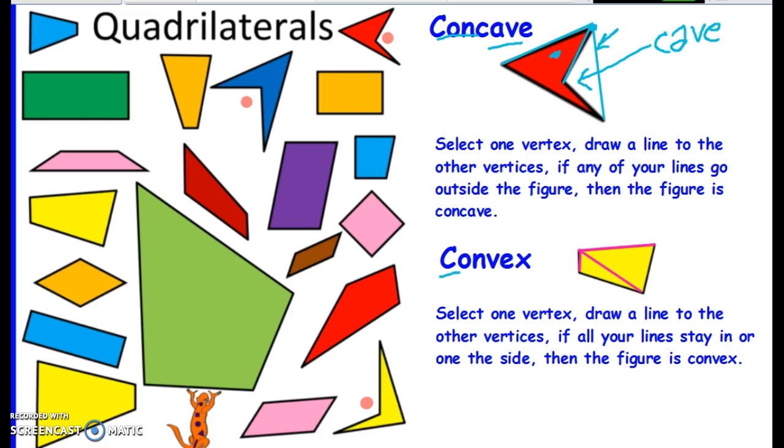Okay, so if it's convex, as you can see here with my little pink lines, I chose this vertex to start at, and I drew a line to all the other vertices, and my lines either stayed inside or on the edge of the quadrilateral.